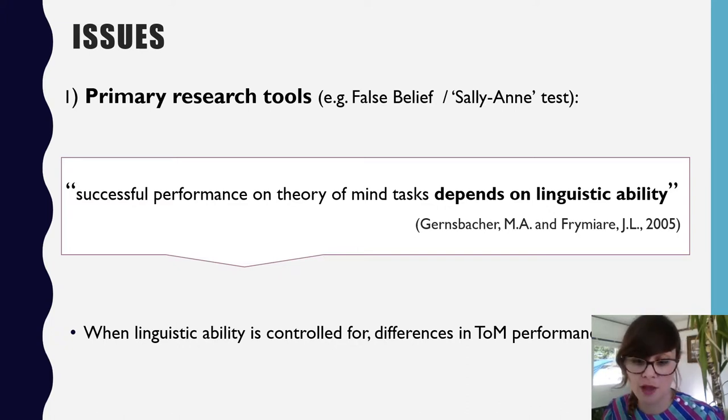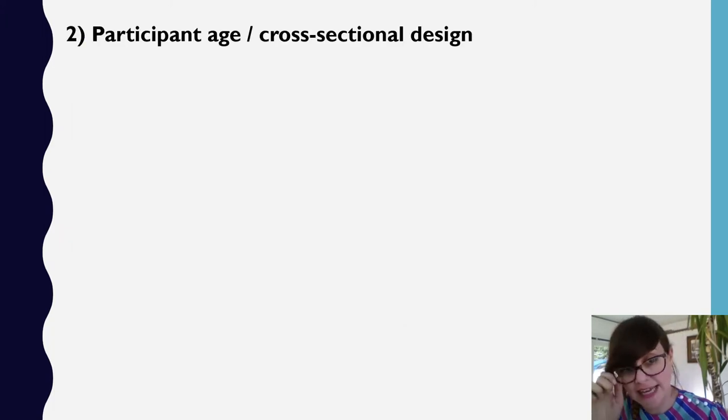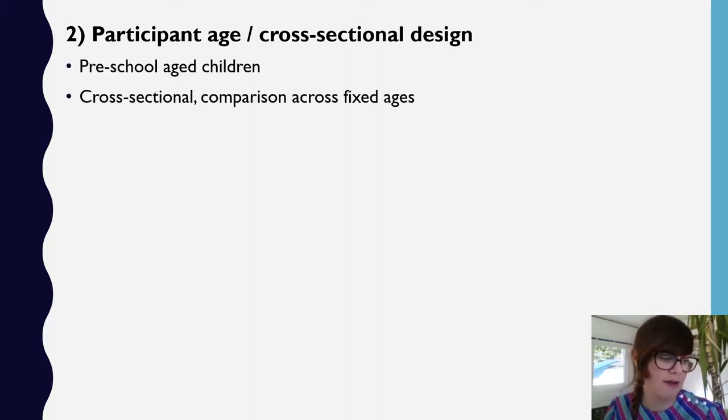Secondly, the second issue: in the original Simon Baron-Cohen study, it featured pre-school age children, and so have virtually all of the follow-up studies, or certainly the majority of them. This is probably based on the fact that by this age, pre-school age, neurotypical children already pass a false belief test. It's also worth noting that in the original study, 20 percent of autistic children also passed the false belief test, which is a kind of inconvenient fact. Crucially, these studies have been cross-sectional in the sense that they're comparing age-matched participant groups.